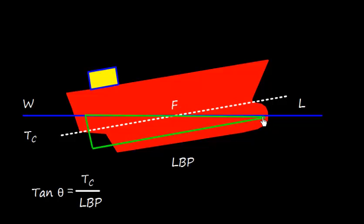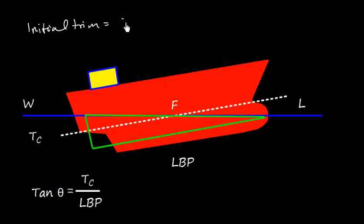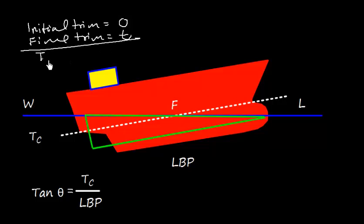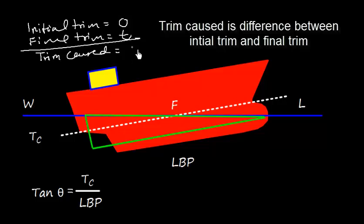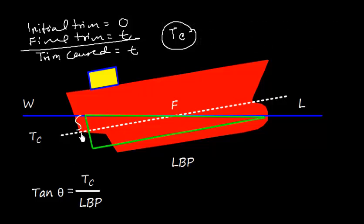In this case, let us consider this green triangle, which represents TC — the trim cost. The initial trim was zero, the ship was at even keel. But the final trim after shifting the weight, say final trim T, gives a total trim cost of zero minus T, that is T. So TC is the trim cost, and tan θ equals TC divided by LBP, where θ is the angle of trim.